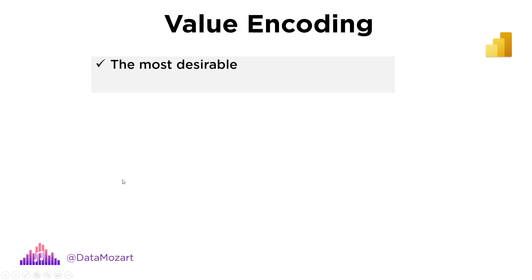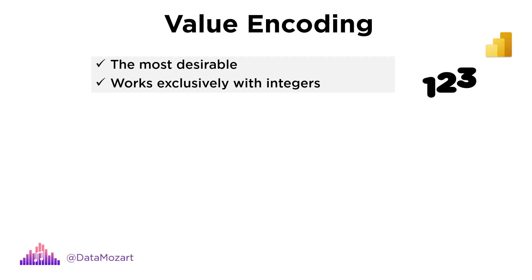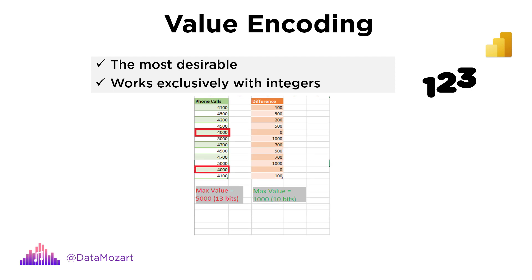Value encoding is the most desirable encoding type since it works exclusively with integers and therefore requires less memory than, for example, text values. Let's say we have a column containing a number of phone calls per day and the value varies from 4,000 to 5,000. VertiPaq finds the minimum value — 4,000 in our example — sets it as a starting point, then calculates and stores the difference between this value and all the other values in the column. Three bits of saving per value might not look significant, but multiplied by millions or billions of rows, the memory saved using value encoding is substantial.